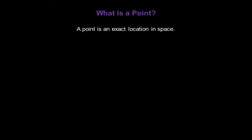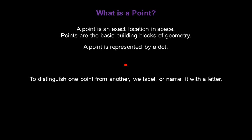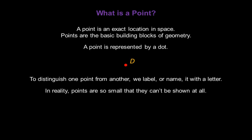What is a point? A point is an exact location in space. Points are the basic building blocks of geometry. A point is represented by a dot. To distinguish one point from another, we label or name it with a letter. In reality, points are so small they can't be shown at all. They have no dimensions.